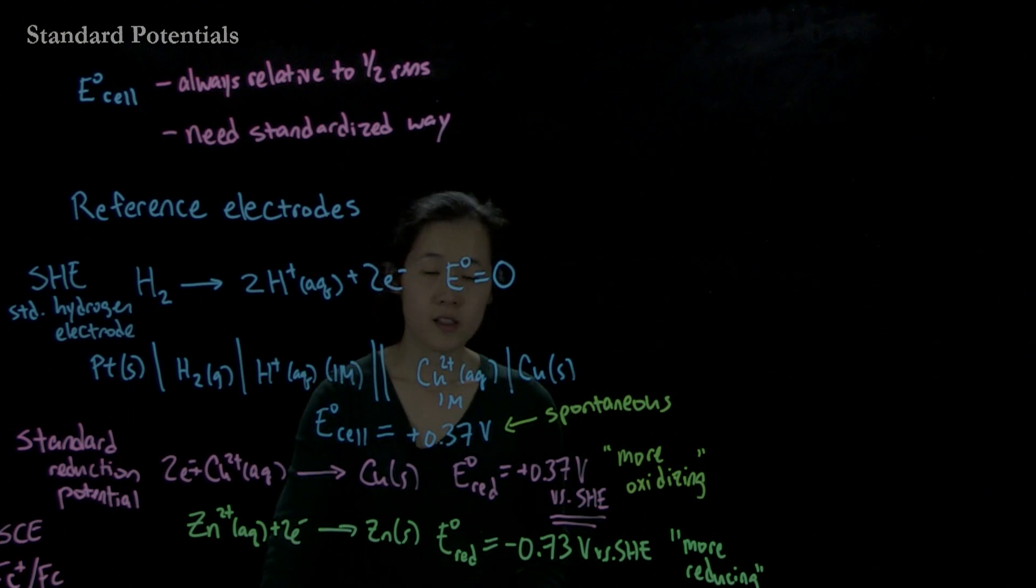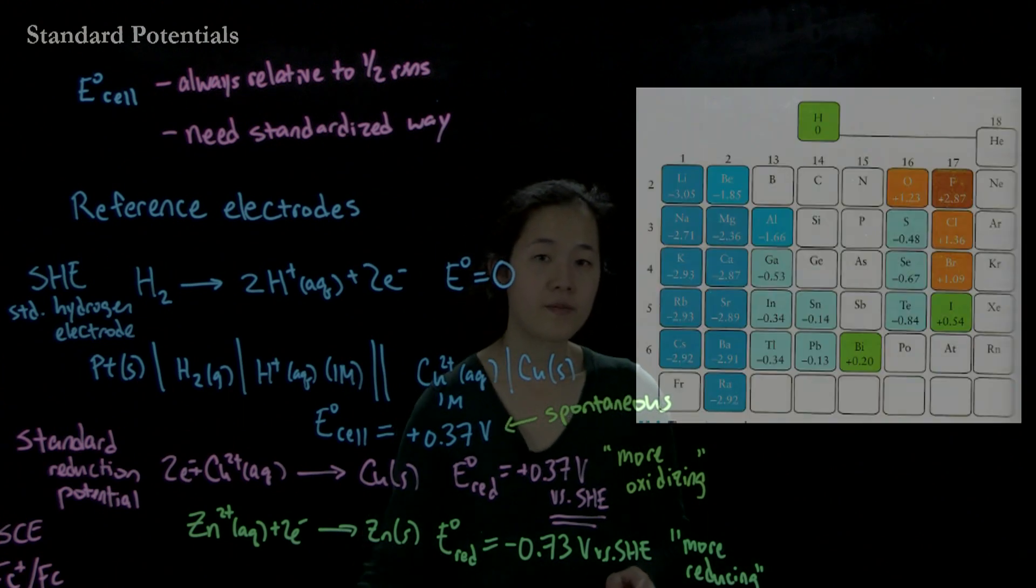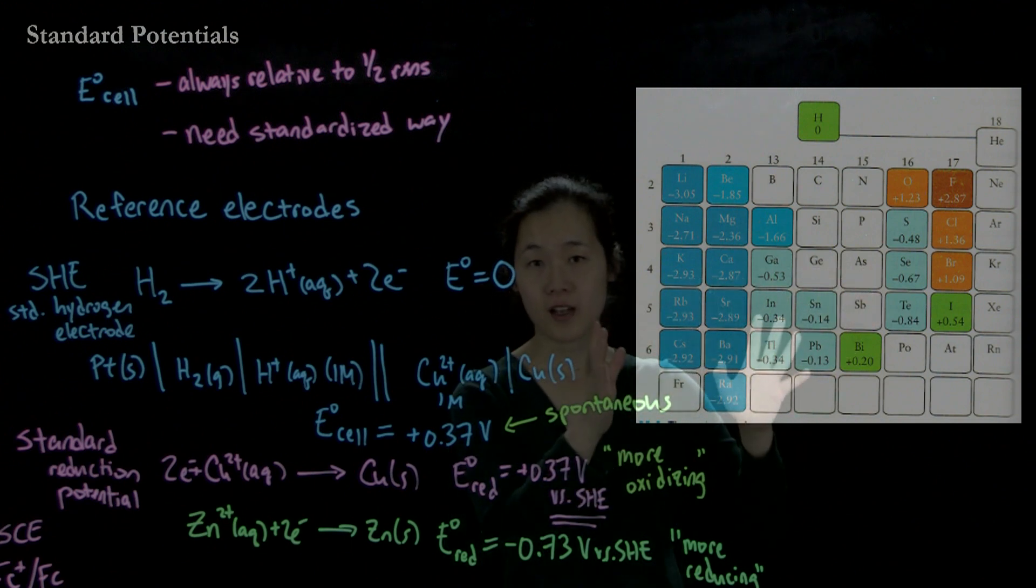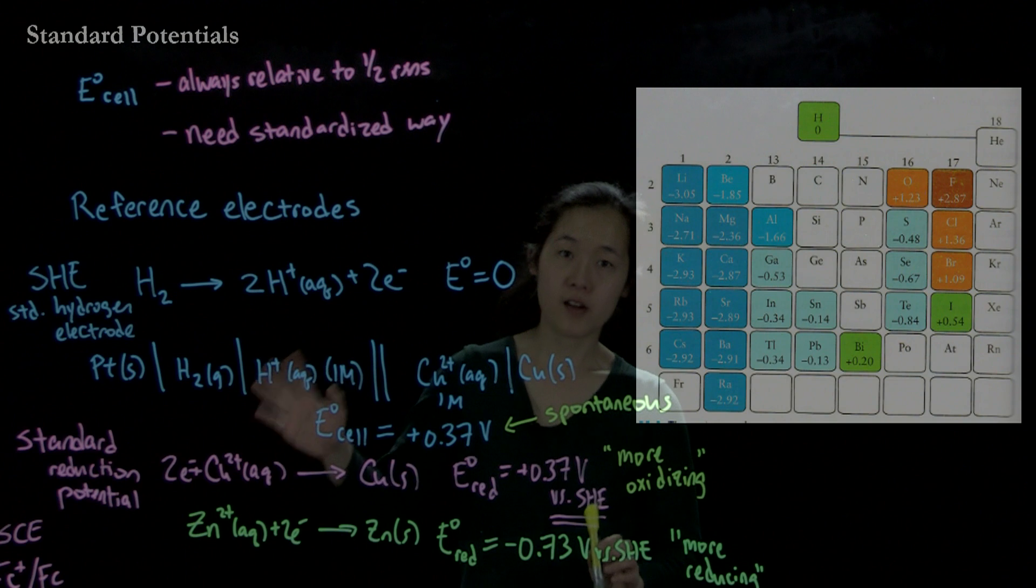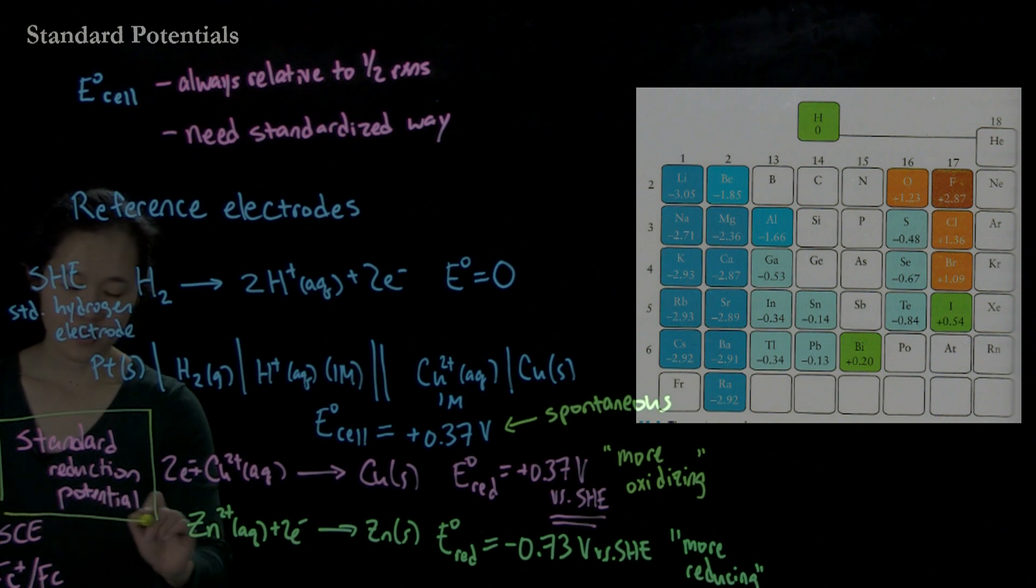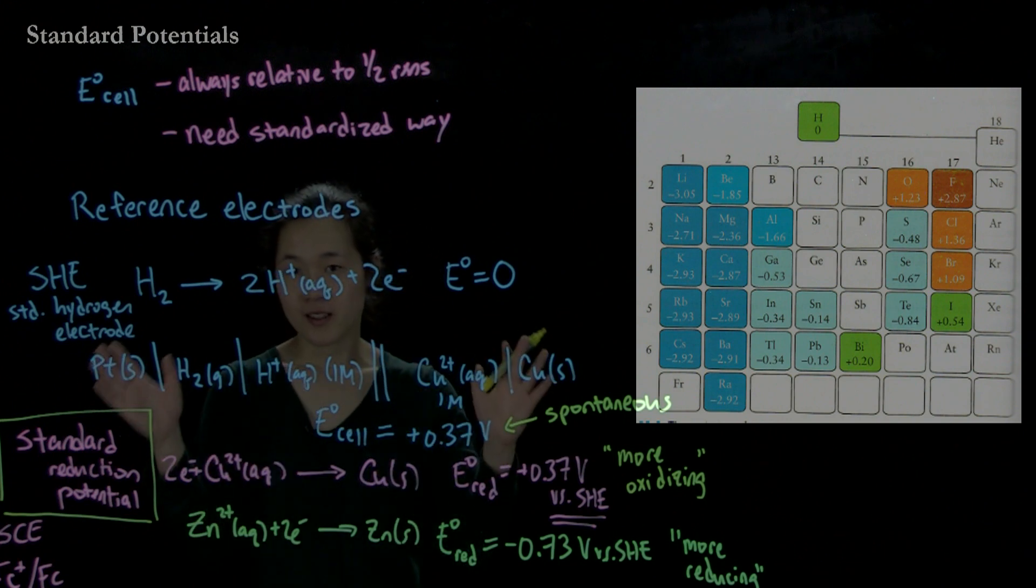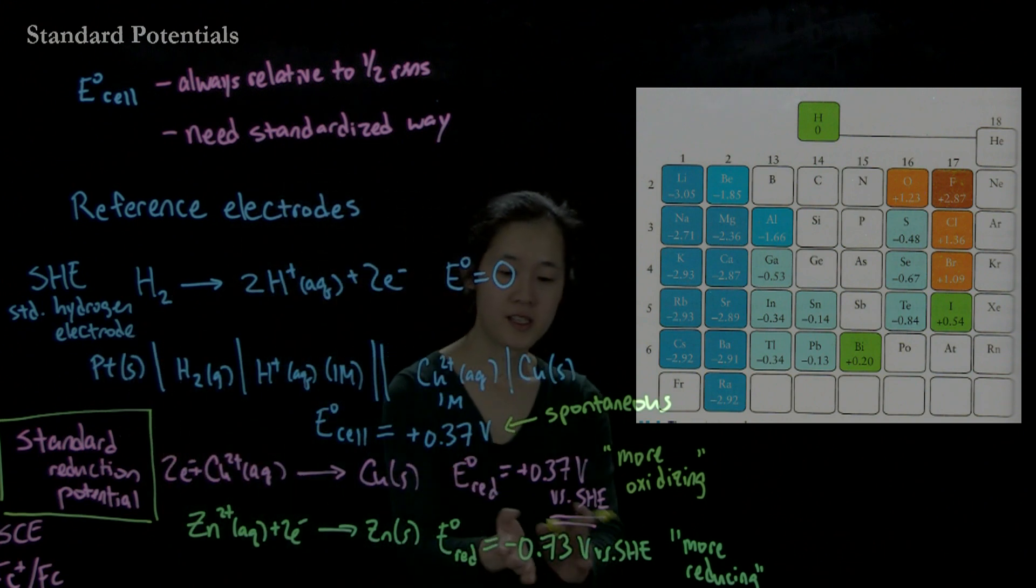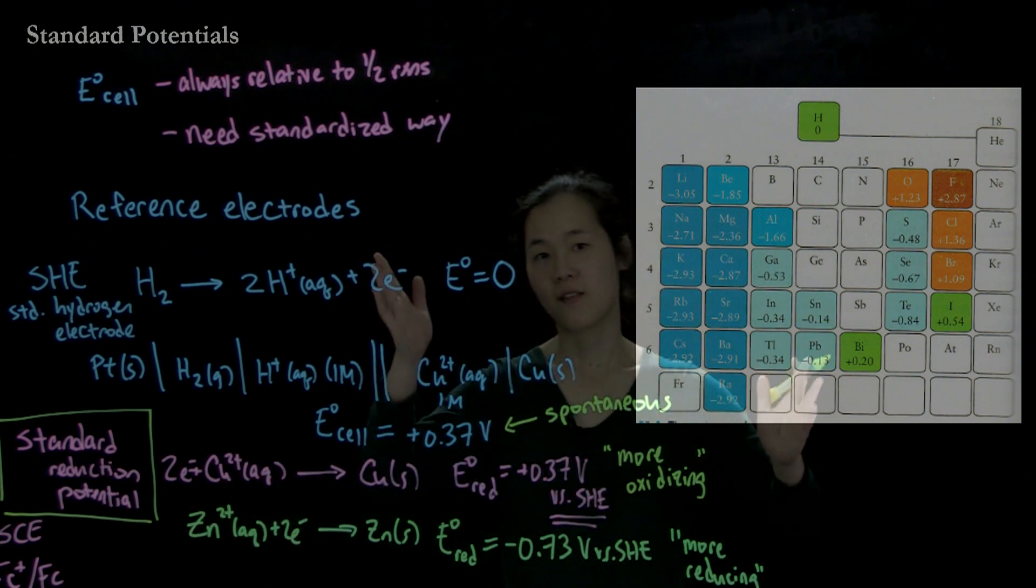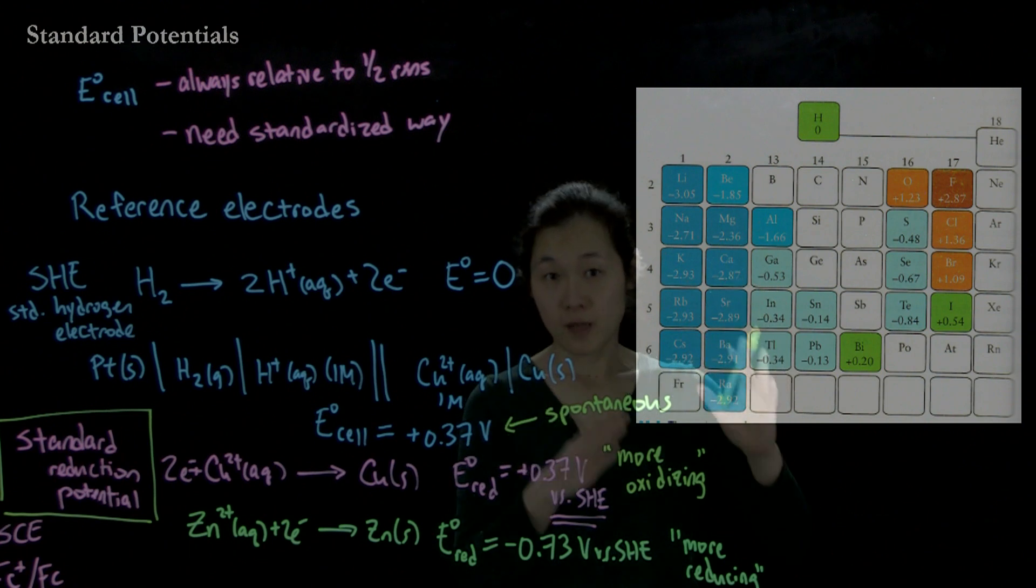So let's look at how these potentials compare across the periodic table. Over here is, remember periodic trends? So we can see how the potentials of these half reactions - the standard, the industry standard, academic standard, is to report reduction potentials. We always go from the more oxidized state to the more reduced state, and that's how we can keep things in check. Even though this is negative, it wants to be actually oxidized. We just report this so that we're all on the same kind of reference scale.